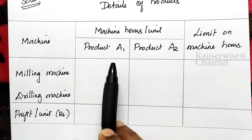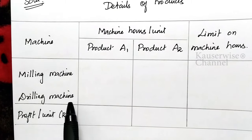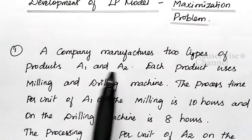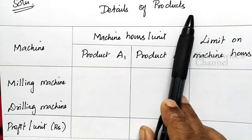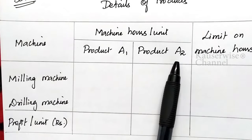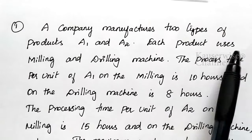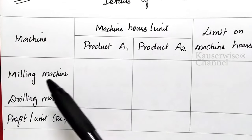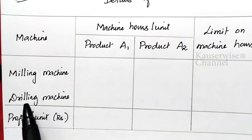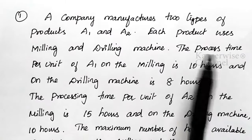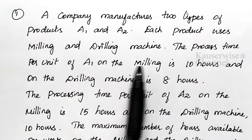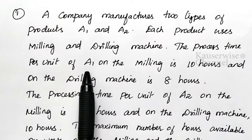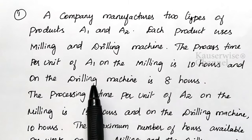For product A1, how many machine hours are required for milling and drilling? See the problem: the process time per unit of A1 on the milling is 10 hours and on the drilling machine is 8 hours. So milling machine required to process A1 is 10 hours, and drilling machine is required to process A1 for 8 hours.